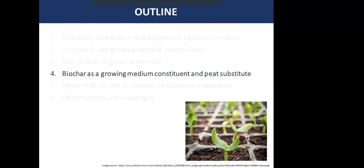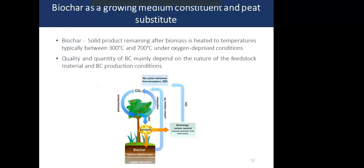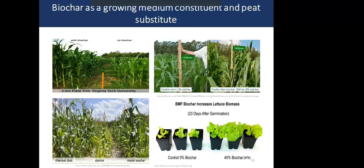In this context, biochar is recently getting increased attention as a growing medium constituent and peat substitute. Biochar is a solid product remaining after biomass is heated to temperatures typically between 300 and 700°C under oxygen-deprived conditions. The quality and quantity of biochar mainly depend on the nature of the feedstock material and production conditions. Biochar is a well-established organic soil amendment to improve plant productivity in field conditions, providing a basis for its use in growing mediums.